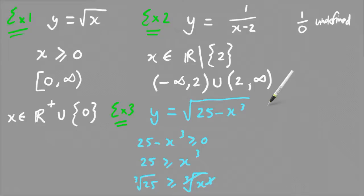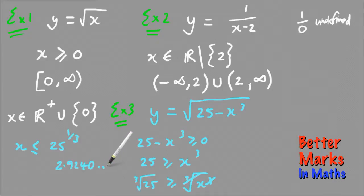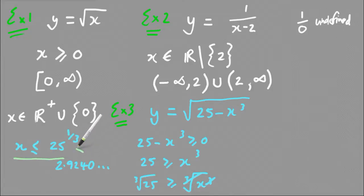And that becomes, I'll just actually do that over here. So x is less than or equal to the cube root of 25, which can also be written like this, 25 to the power 1 third. And that's the maximal domain. So any x value that's less than 25 to the power 1 third, which actually equals 2.9240. And that actually keeps going forever.